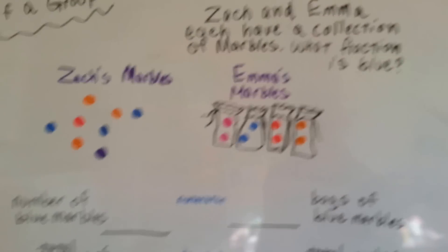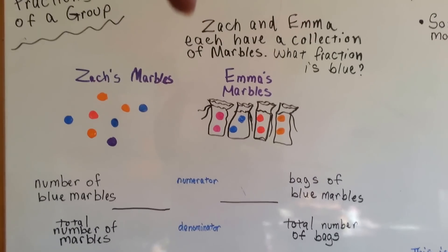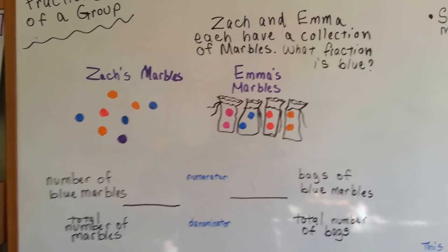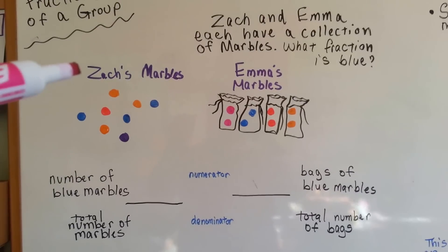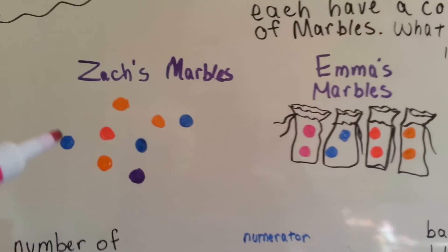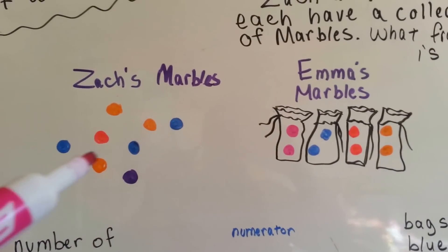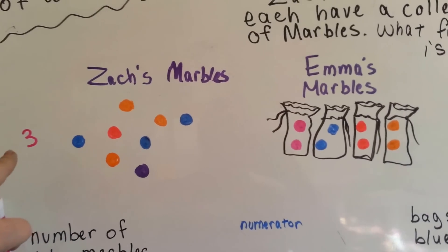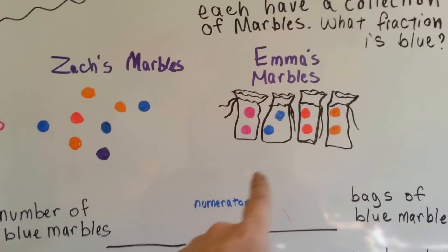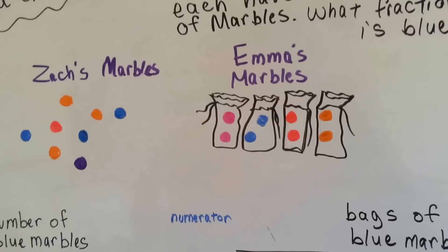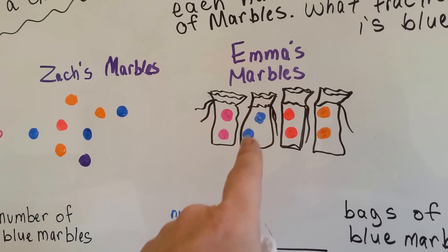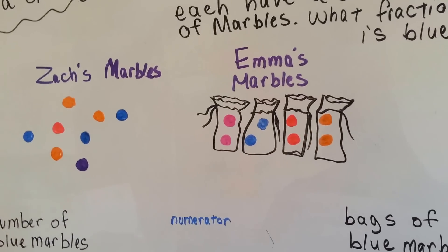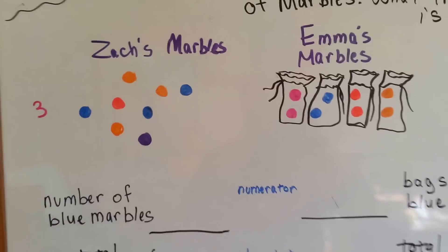Let's take a look at this thing I've made here. Zach and Emma each have a collection of marbles. What fraction of their collections are blue? So here's Zach's marbles. Let's move in on them. He's got one, two, three blue marbles. Three are blue, because that's what it's asking. In Emma's, how many are blue? Just one, two are blue right here, but hers are in bags, so they're in groups. So let's take a look at Zach's first, before we get into this.